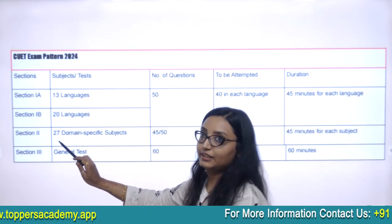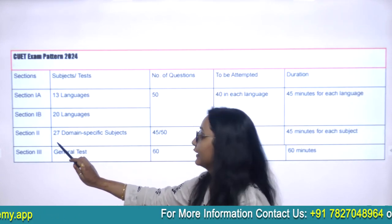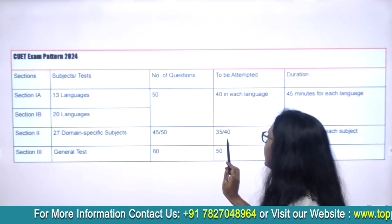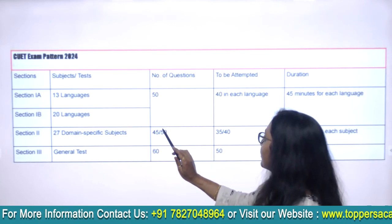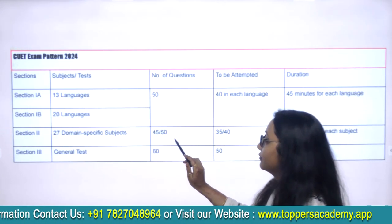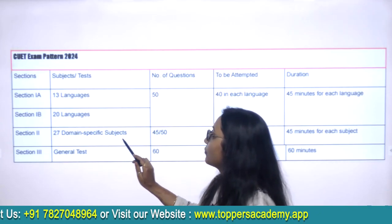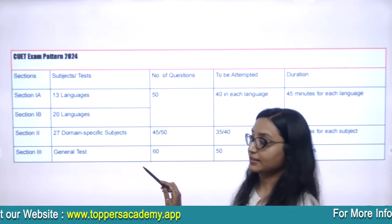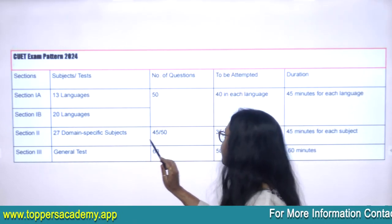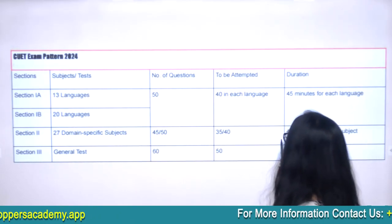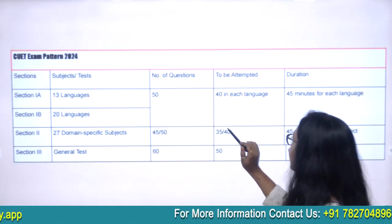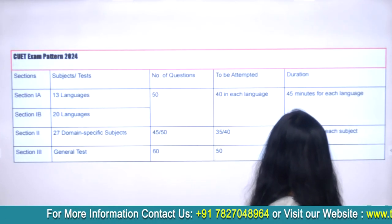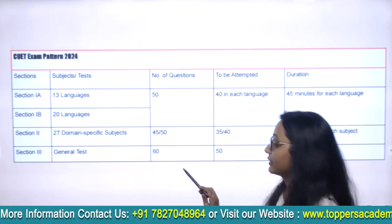Coming to section two: there are 27 domain-specific subjects, with a total of 50 questions. The student has to attempt a minimum of 6 domain-specific subjects, and must attempt at least 35 out of 40 questions. 45 minutes are given for each subject.